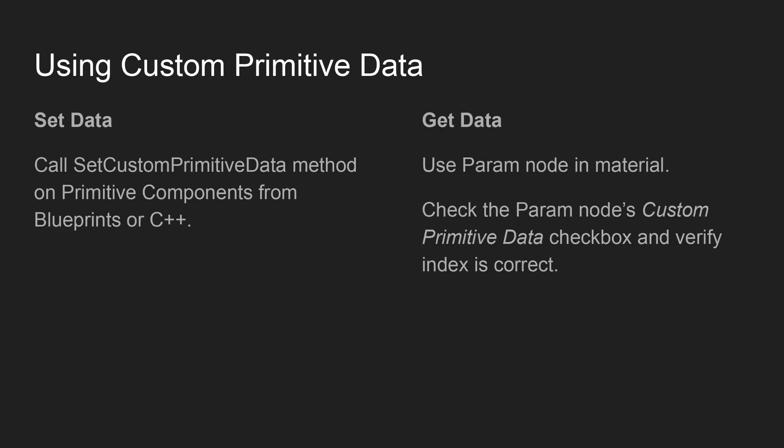To use custom primitive data, first we set the data on a primitive component using a set custom primitive data float or vector function. The next thing we do is get the data using a parameter node in a material. That parameter node needs to have the custom primitive data checkbox set and also the index that it's reading from. Rather than using parameter names like dynamic material instances do, you use indexes from zero to the number of parameters you have minus one.